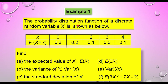Example one. Given the probability distribution function of a discrete random variable X shown in the table, where x equals 0, 1, 2, 3, and 4, with corresponding probabilities. Find: (a) the expected value of X, (b) the variance of X, (c) the standard deviation of X, (d) the expected value for 3X, (e) the variance for 3X, and (f) the expected value for 3X² + 2X − 2.